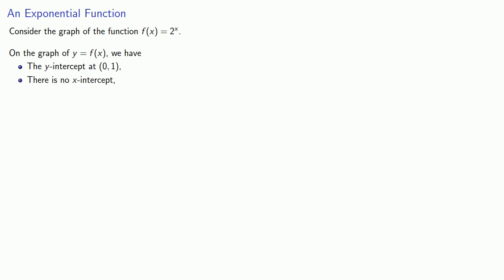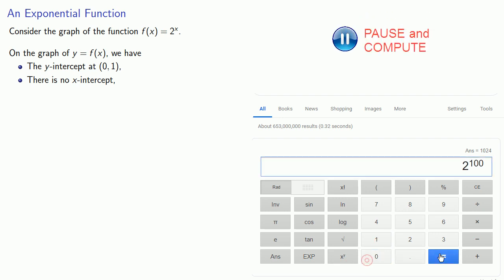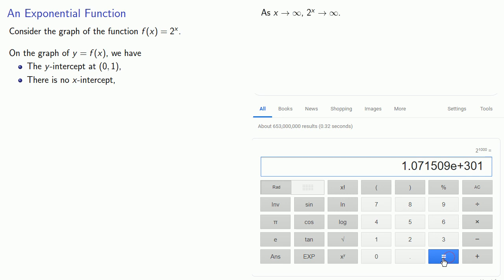What about end behavior? Let's see what happens to 2 to the power x as x gets large. We can evaluate 2 to the 10th, 2 to the 100th power, and 2 to the power 1,000. We see that as x goes to infinity, 2 to the power x also goes to infinity.